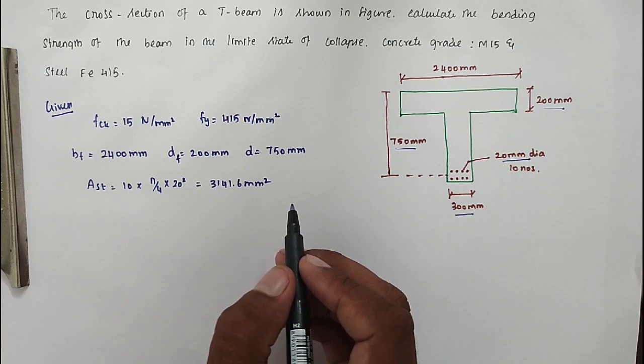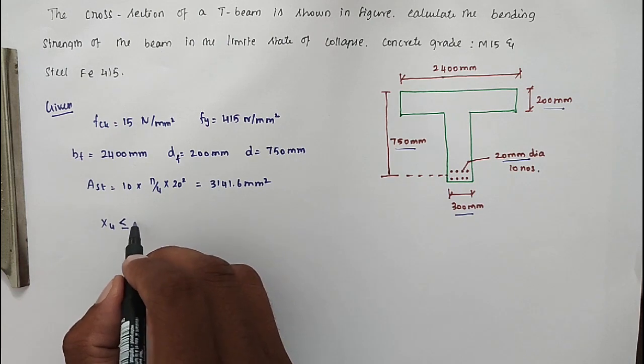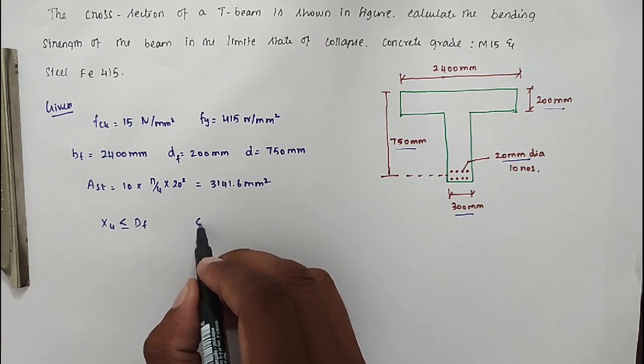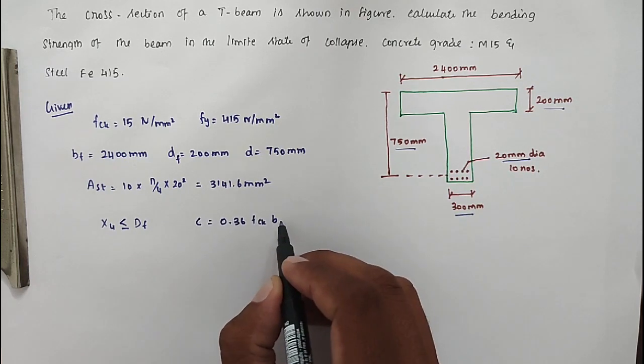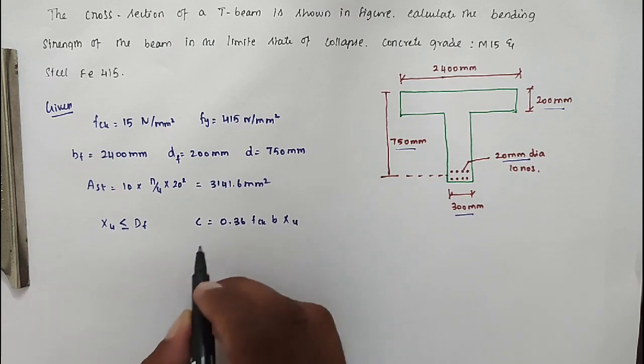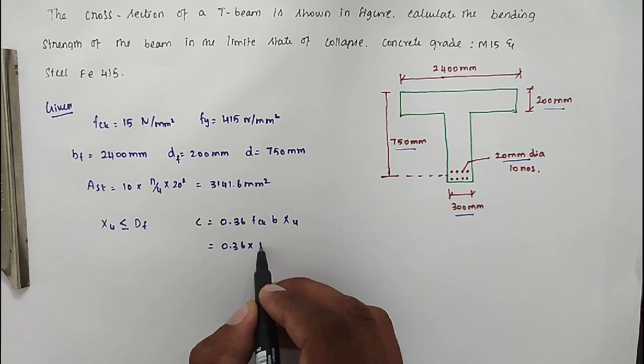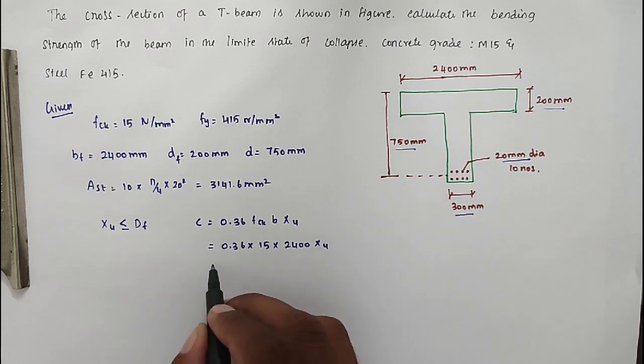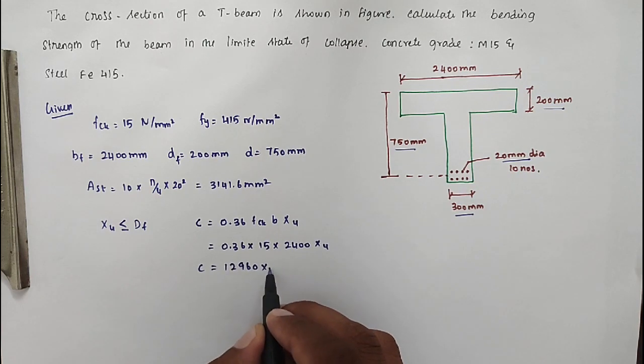Now we have to assume depth of neutral axis is less than or equal to depth of flange. The compression force C equal to 0.36 FCK B into XU. Substituting all the values: 0.36 into 15 into 2400 into XU. We got C equal to 12960 XU. This is equation 1.